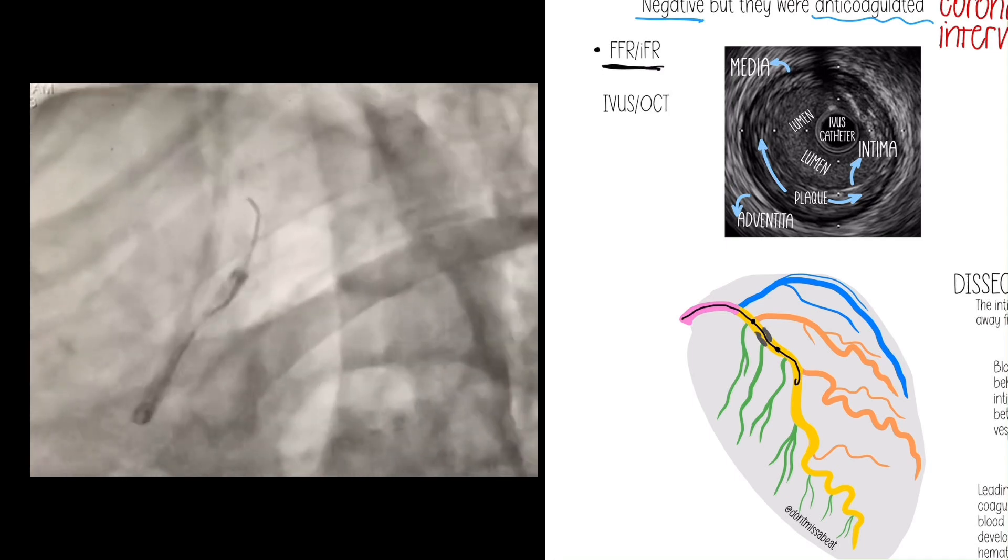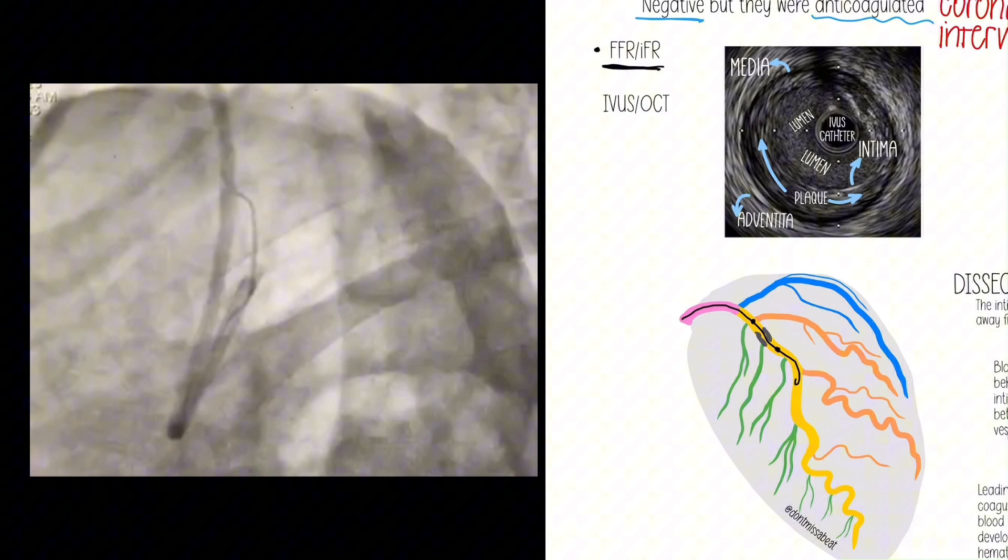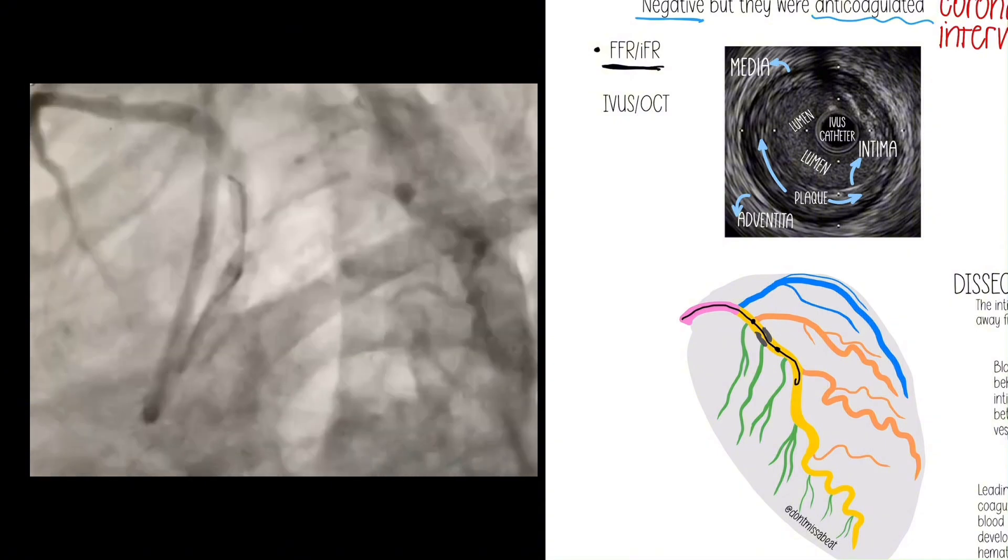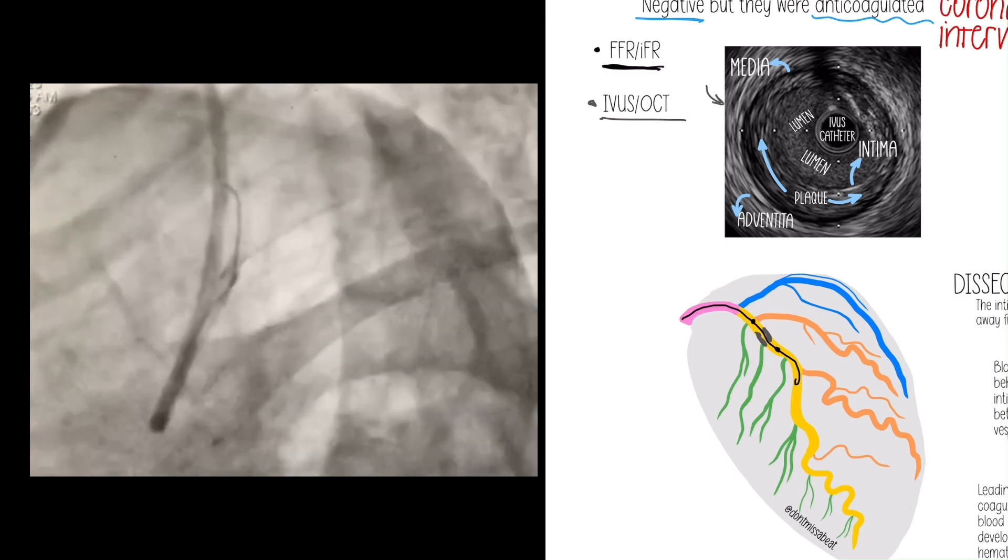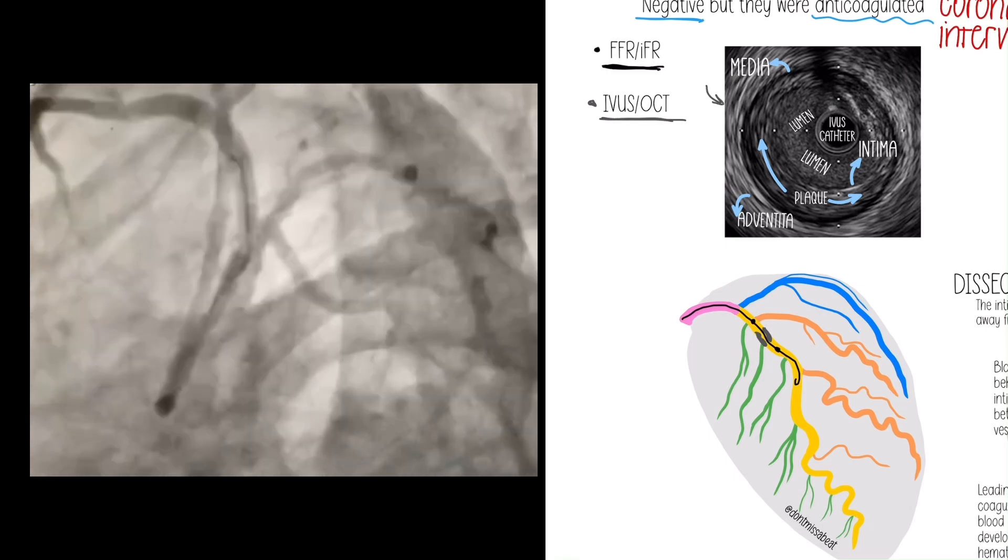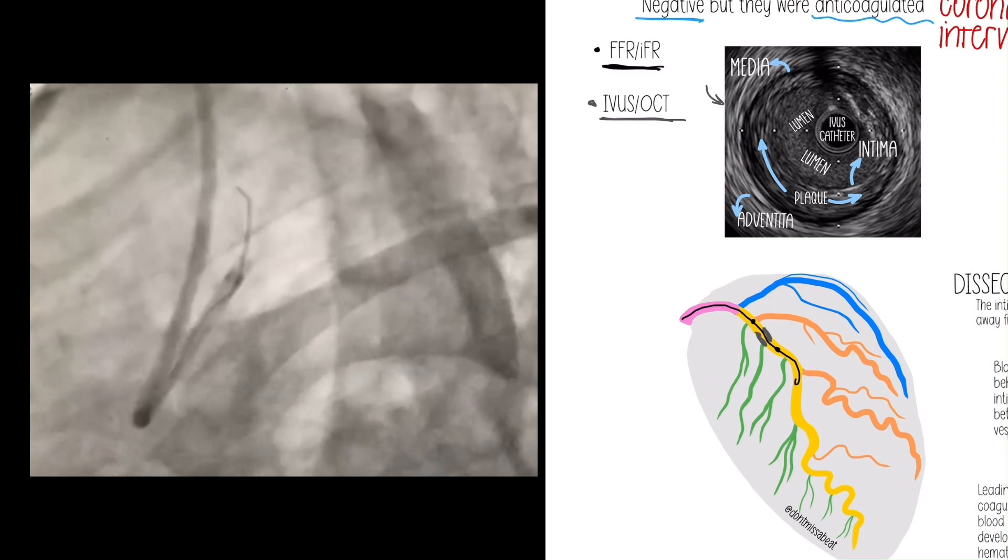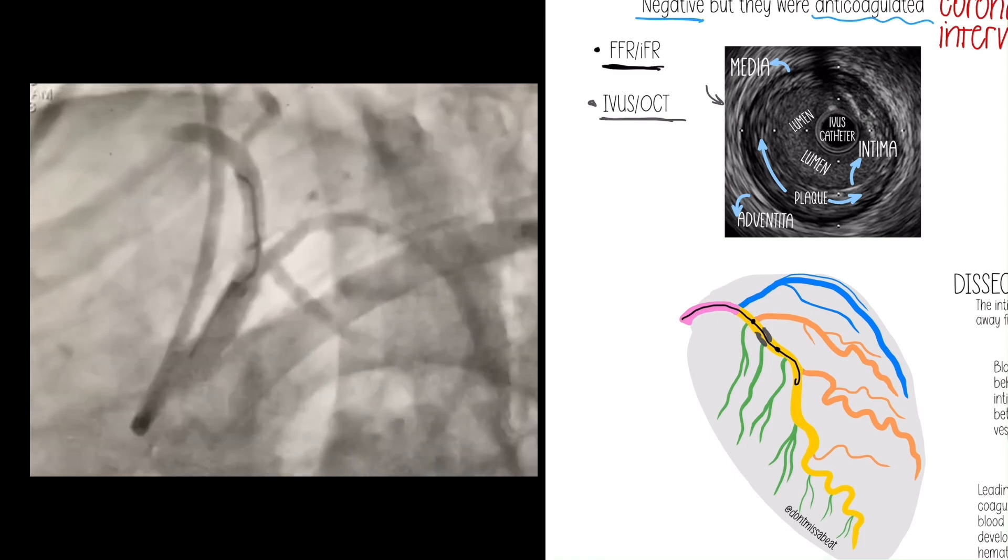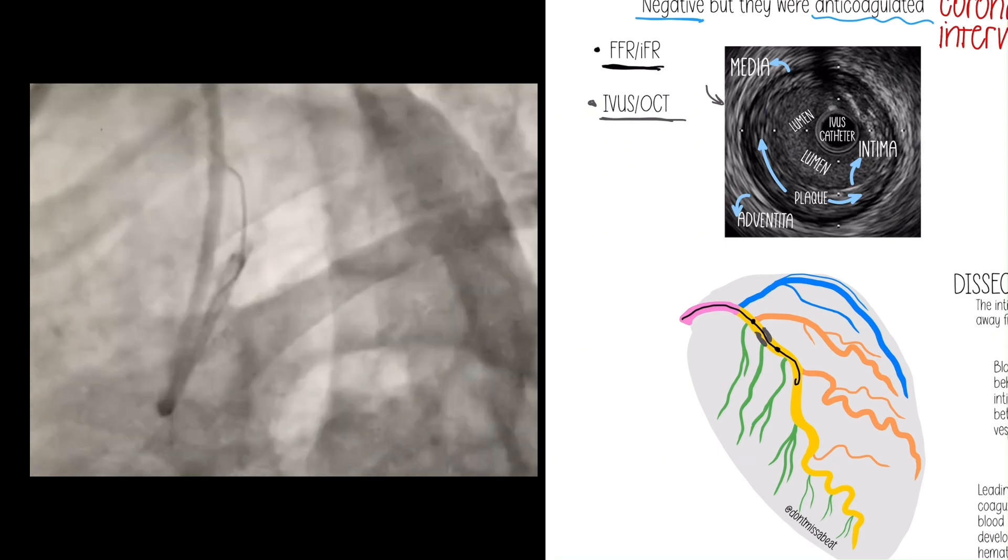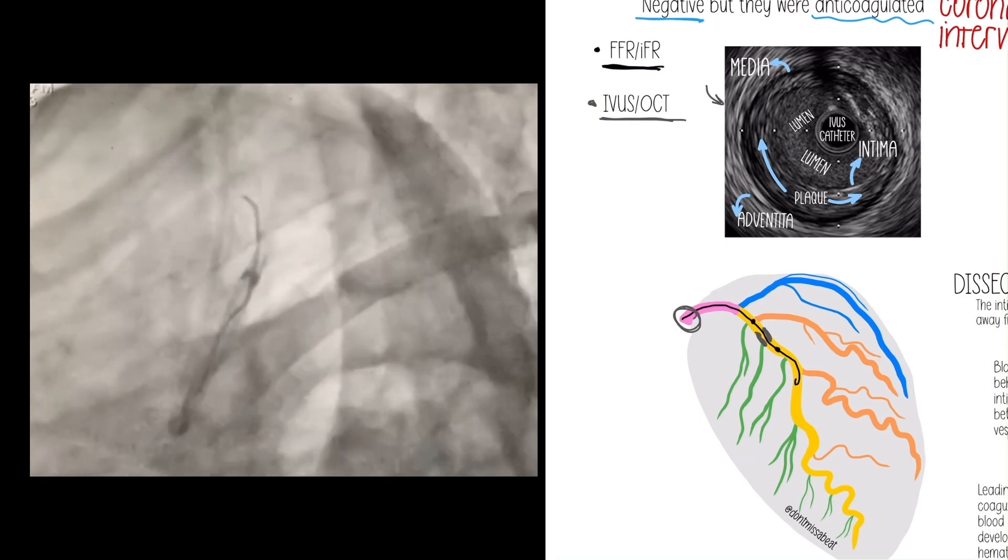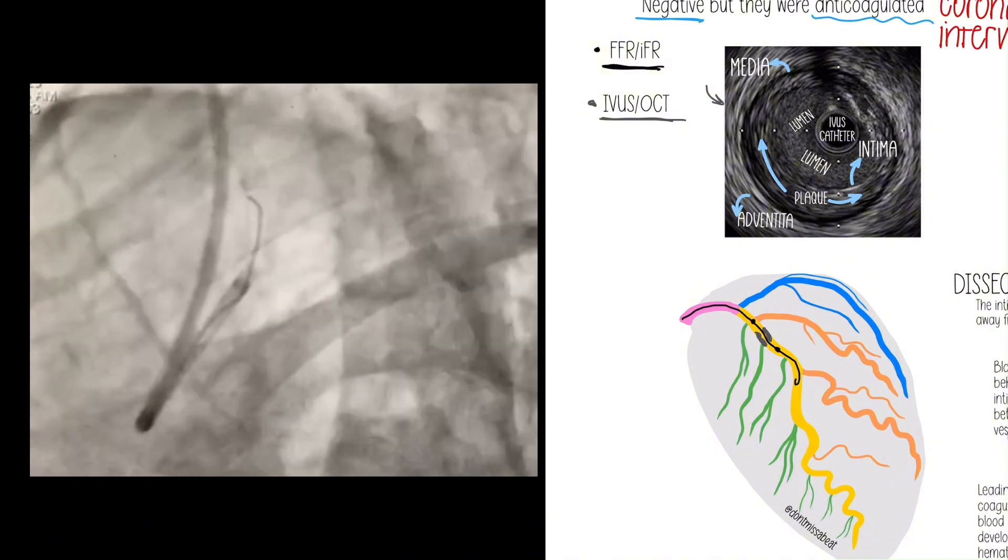Same thing for IVUS and OCT. This is an IVUS example right here. We're just looking, so it's like a camera, like a colonoscopy for the coronary arteries. We're looking at the type of plaque morphology. If they have left main disease, we're going to measure the area of the left main to see if it is severe or not.